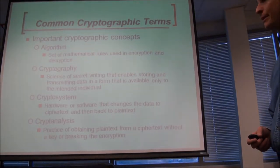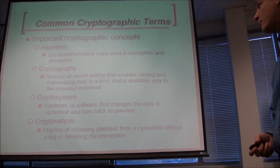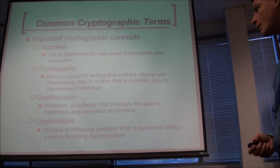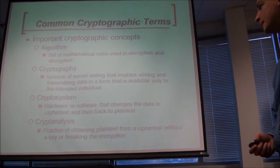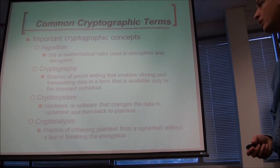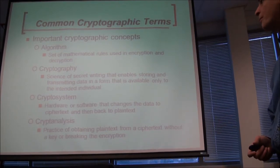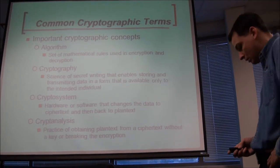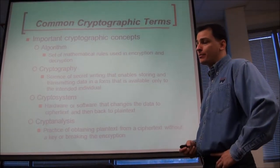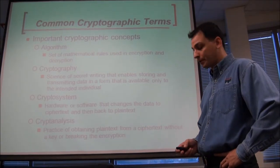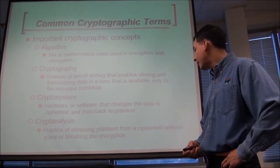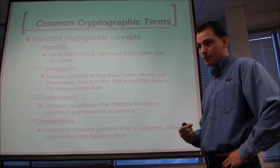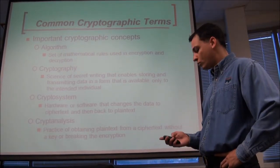Some basic terminology 101 here. Algorithms are rules used in encryption and decryption. An algorithm and a cryptosystem together are really a procedure — the cryptosystem is the hardware and software piece, and the algorithm is the rules. You have a symmetric algorithm: how does it take data from plaintext to ciphertext, procedurally? Cryptanalysis is analyzing ciphertext and plaintext, trying to break cryptosystems or algorithms.